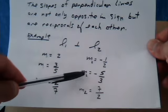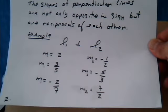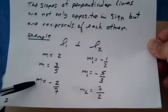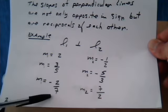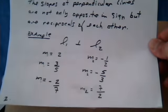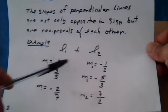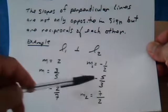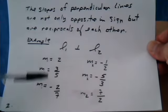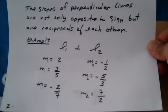If the slope of line 1 was negative 2 sevenths, the slope of line 2 would be 7 over 2. So two things happen. The sign changes and the numbers are flipped around.